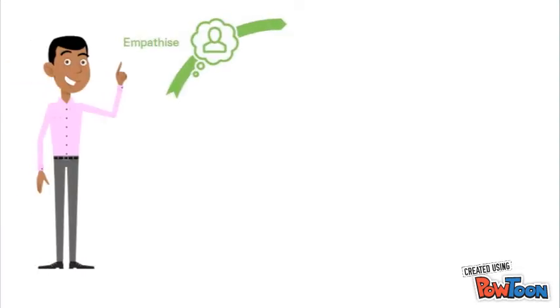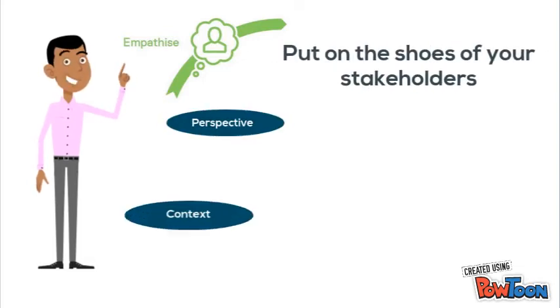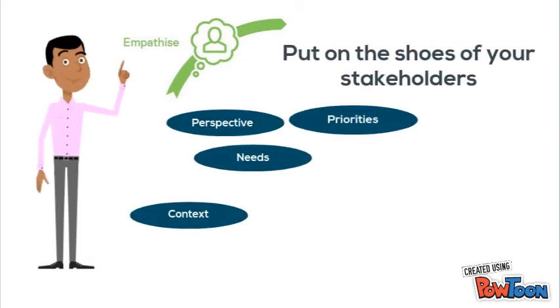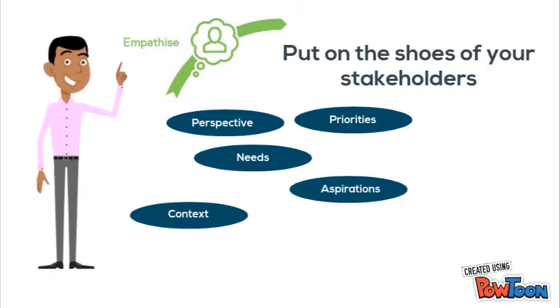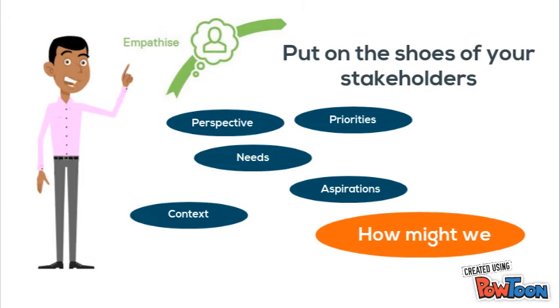Then we have the empathizing stage. The aim of this stage is to put on the shoes of your stakeholders and understand their perspective, context, needs, and priorities. At the end of this stage you should be able to develop an appropriate how might we question that defines the challenge you'll be addressing. We will come back to this concept later on.